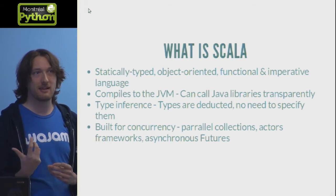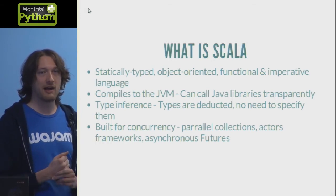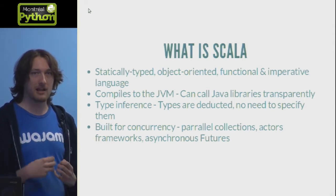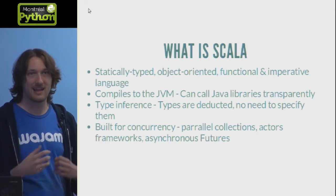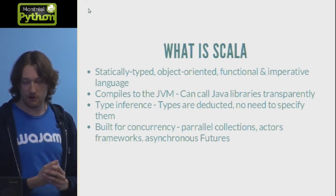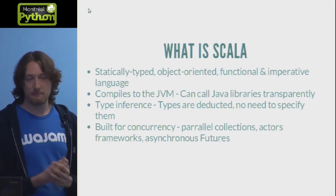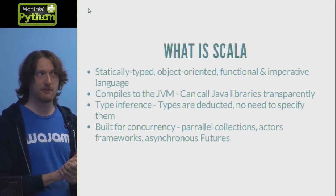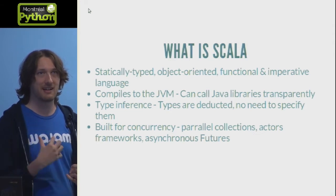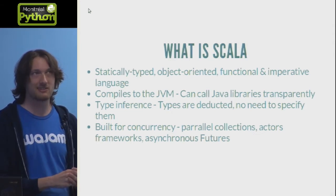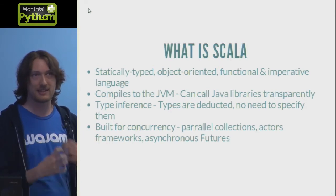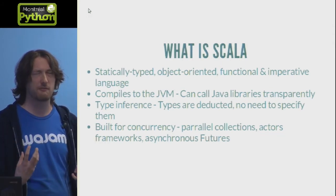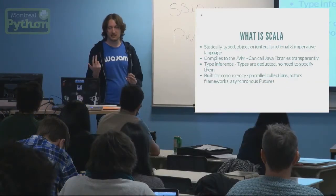Scala has type inference, so when you're writing a value or variable, it will try to extrapolate the type from what is being assigned to it, so you won't have to explicitly specify types as often as in languages like Java. It's also built for concurrency — the basic libraries already include parallel collections and asynchronous features, with callbacks that compose with each other. In the next version there'll be async/await, similar to what's coming to Python in 3.4.